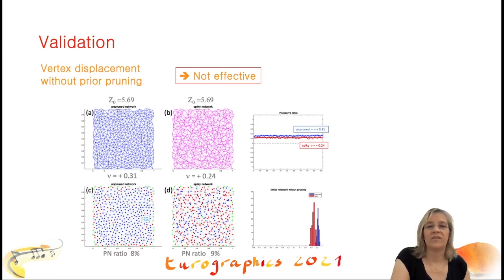In the next two slides, we investigate if simpler solutions could also lead to auxetic networks. First, we wondered if the fairly trivial vertex displacement method is effective when applied without prior pruning. The answer is no. On 100 networks, we get an average Poisson's ratio, which is only slightly decreasing here from blue to red.